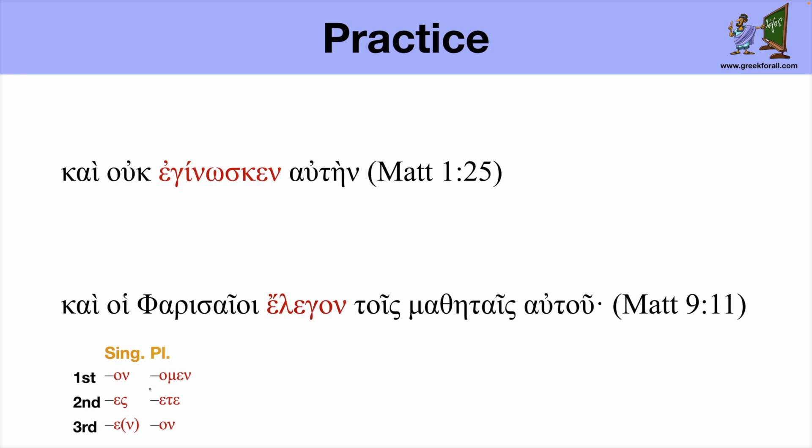So here down below, we have the endings for the imperfect active indicative verbs. Let's remember that there should be an augment preceding each and every verb. So now let's read the first example from Matthew 1:25. Kai uk eginosken auten. So kai means and, uk stands for no, not or don't before the verbs.